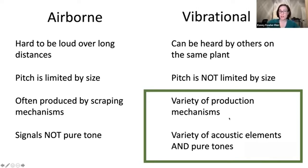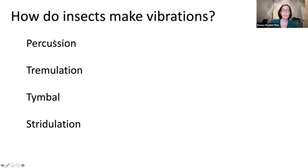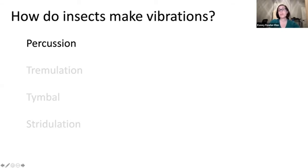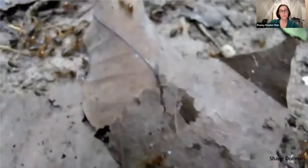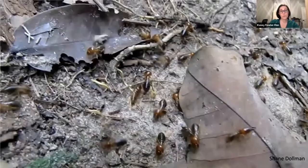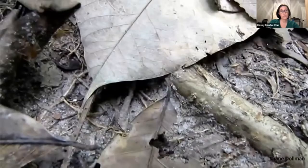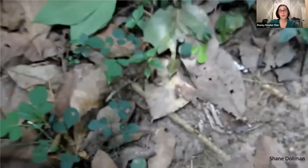The production mechanisms insects use to make vibrational sound vary: percussion — banging on substrates; tremulation — muscle vibrations; timble mechanisms — which amplify the sound; and stridulation — rubbing different body parts together. Here's an example of percussion: termites. The substrate-borne sound is so loud it's actually becoming airborne — pretty incredible. Here's another percussive example: a weevil that bangs its head on the ground.